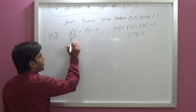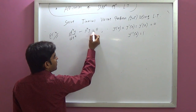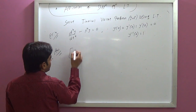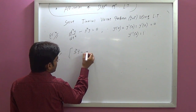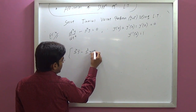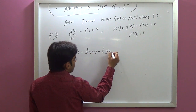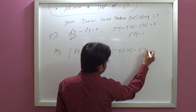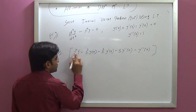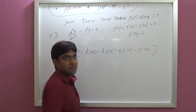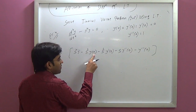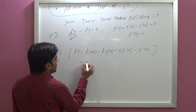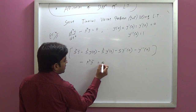Applying Laplace transform: s⁴·Y-bar minus s³·y(0) minus s²·y'(0) minus s·y''(0) minus y'''(0), minus k⁴·Y-bar equals 0. Substituting the initial conditions, all terms go to zero except y'''(0) which equals 1.